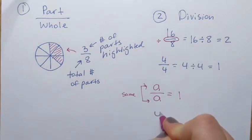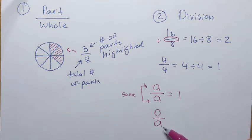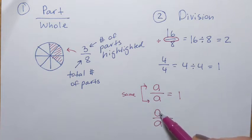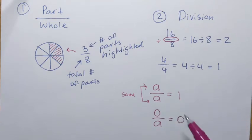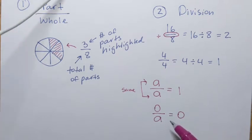What if I have a fraction with 0 in the numerator and anything in the denominator? So 0 over 5, 0 over 7, 0 over 100 — what does that equal? Since a fraction represents division, 0 divided by anything is always 0. So if the numerator is 0, no matter what the denominator is, that fraction always equals 0.